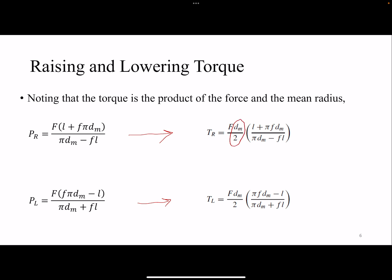Now we know what torque it takes to create the clamping force. We have found the relation between torque and force — here for raising the load, and here for lowering the load. As you can see, the denominator for raising is smaller than for lowering, which means the torque required to raise the load is higher than the torque to lower it. If you have a torque wrench, you can know what torque you're applying and calculate the resulting clamping force, or for a jack, determine how much load you can raise based on that torque.